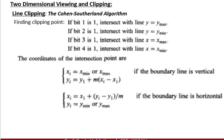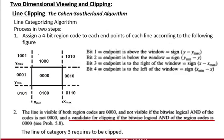We apply the Cohen-Sutherland algorithm. By this algorithm, if the line lies in the 0000 section, the line is inside the window. If it has any other code component, it will be outside.